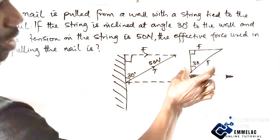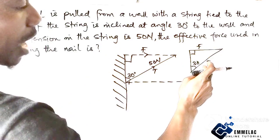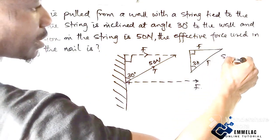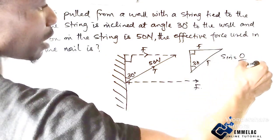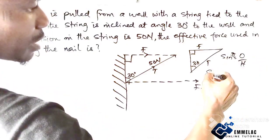Sine equals opposite over hypotenuse. Sine theta, so here we have sine theta which is sine 30. Our opposite here is F over the tension, so with this we can resolve, our F